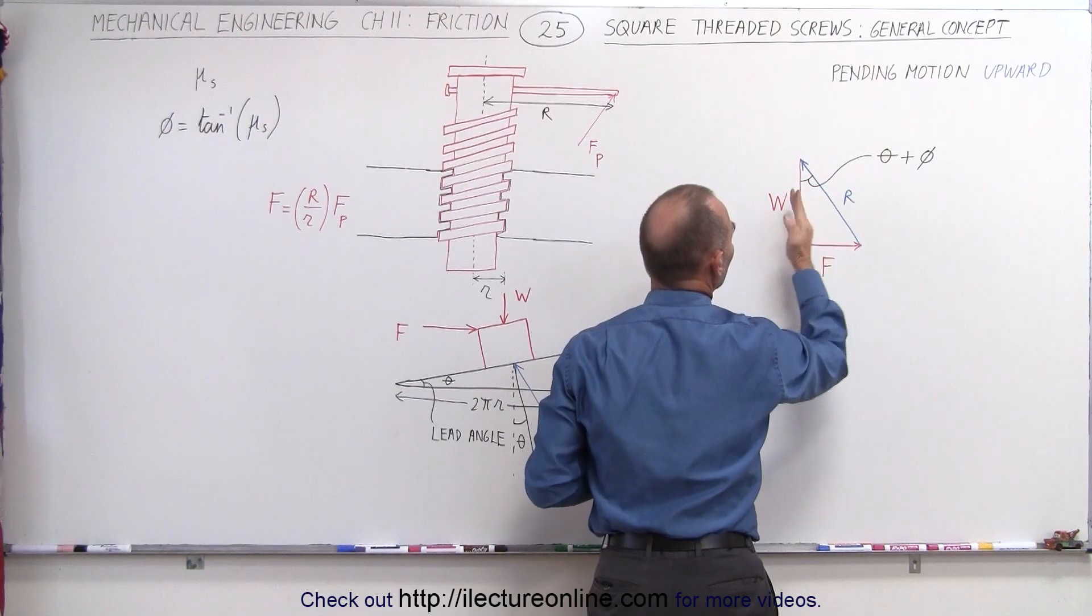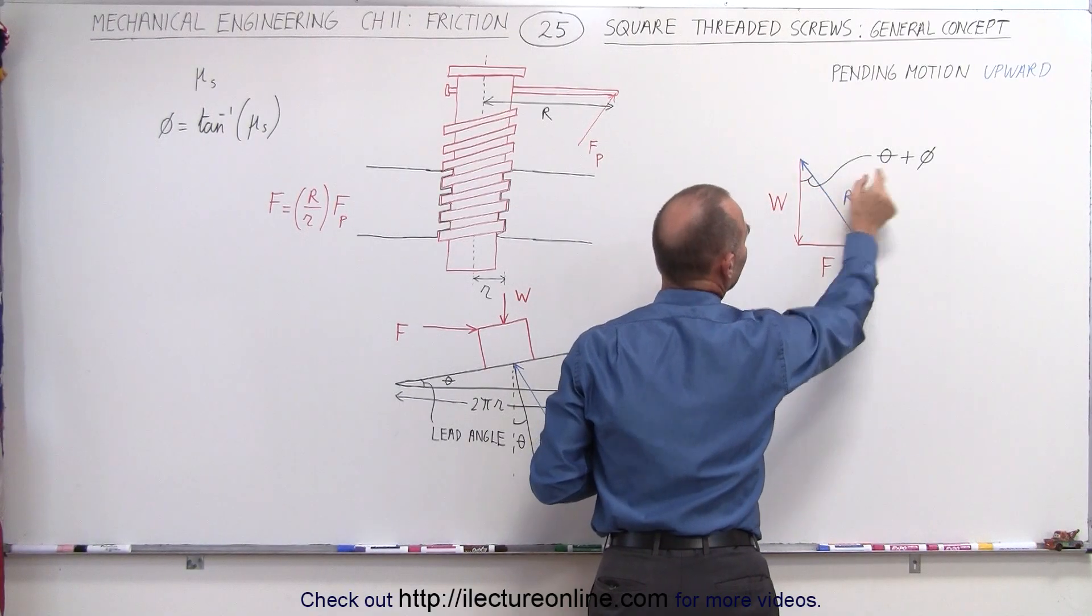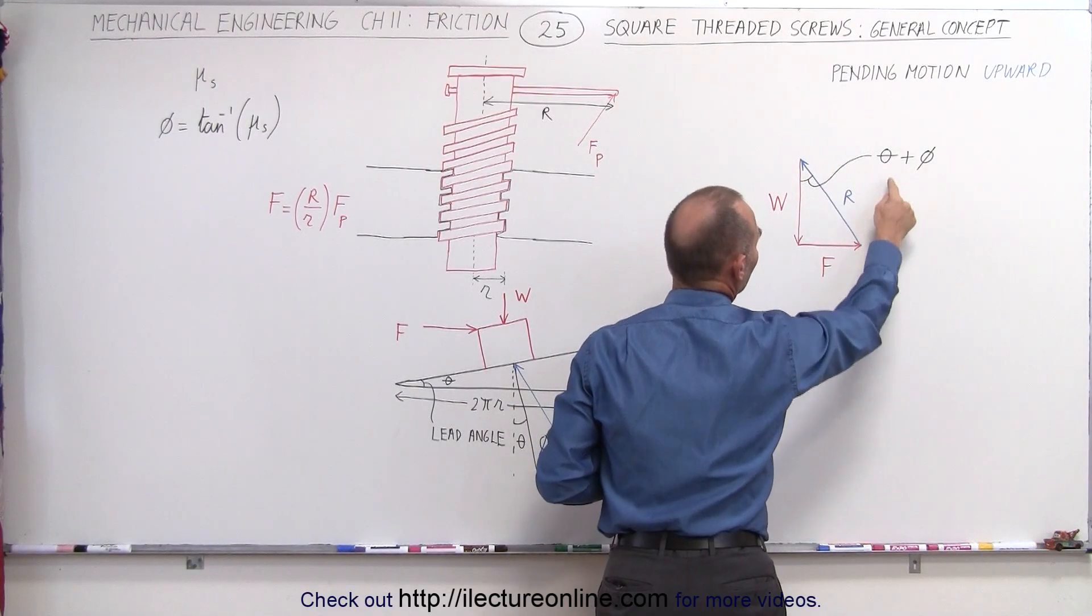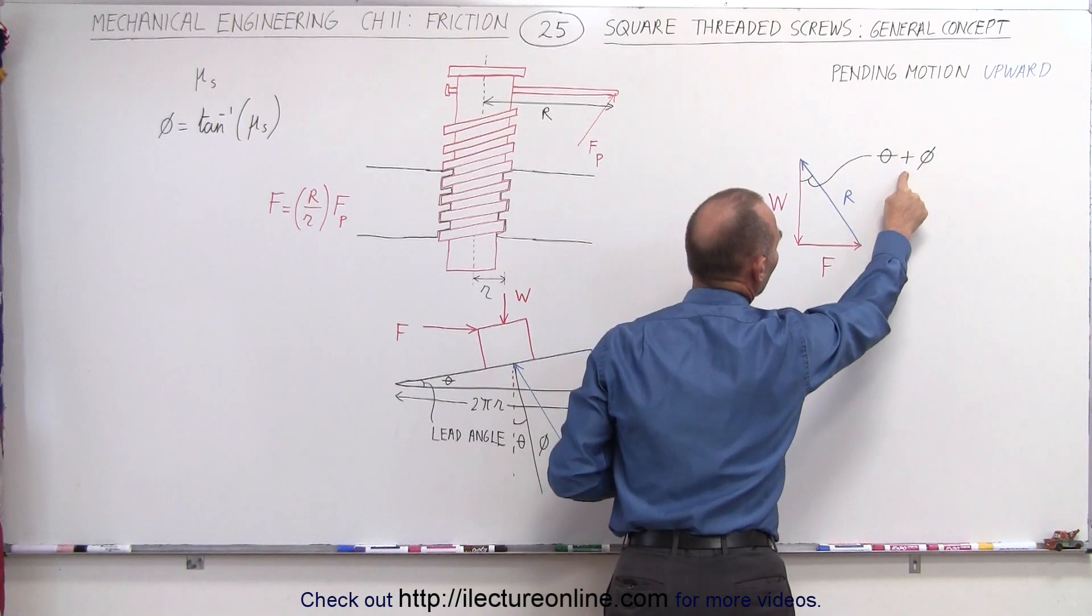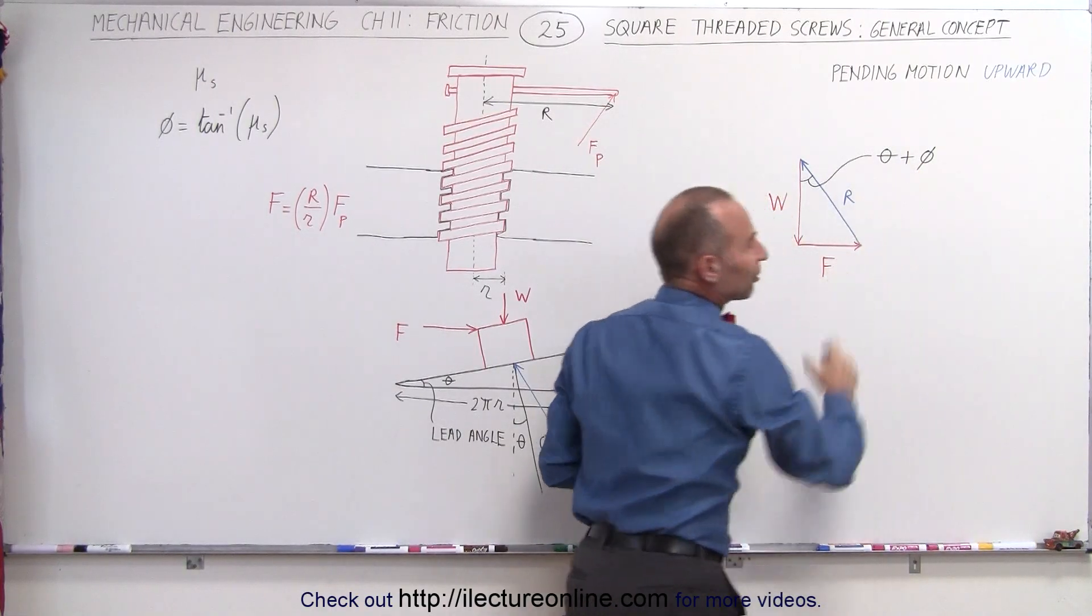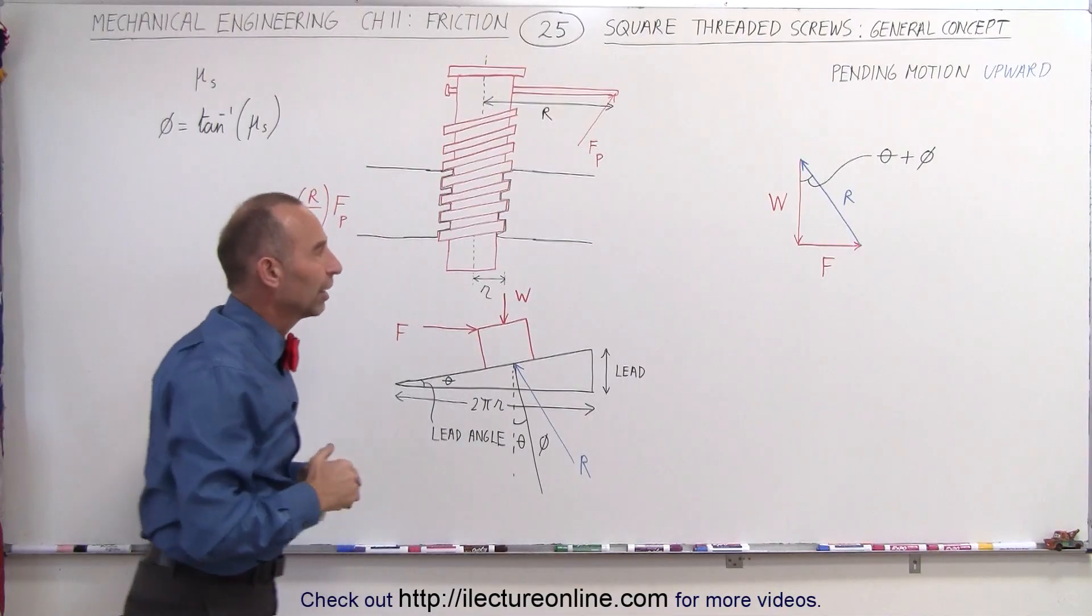And notice that the angle between the weight, which is the vertical, and the reactionary force is simply the lead angle plus the angle caused by the friction between the surface and the screw.